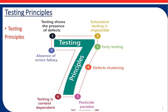The sixth principle is that testing is context dependent. Testing is done differently in different contexts. For example, safety-critical industrial control software is tested differently from e-commerce or mobile apps. As another example, testing in an agile project is done differently than testing in a sequential lifecycle project.